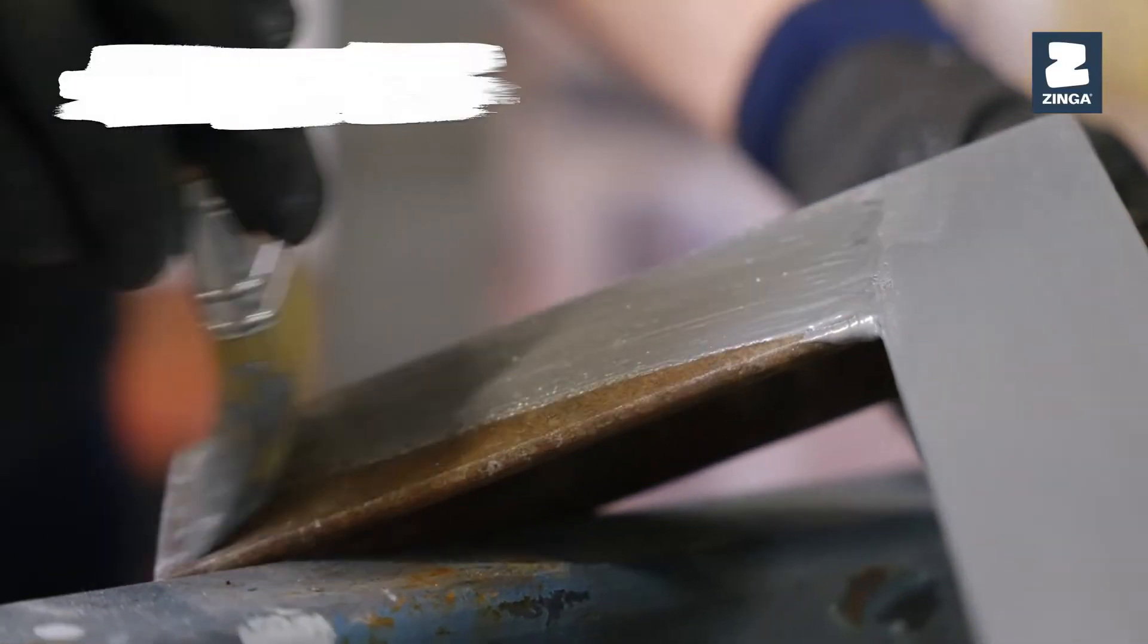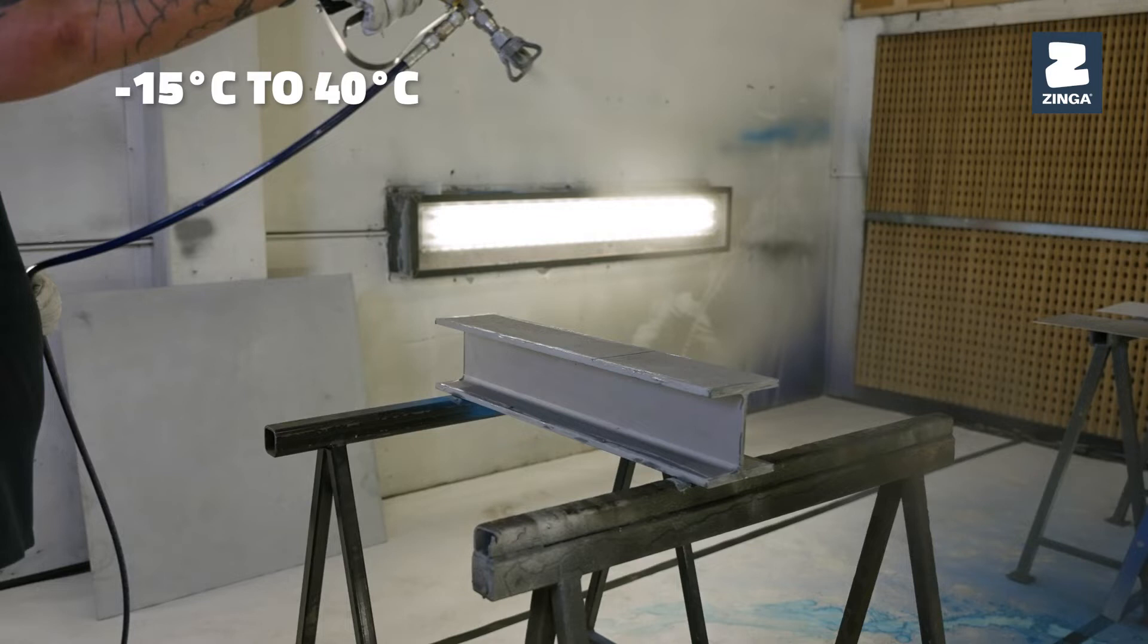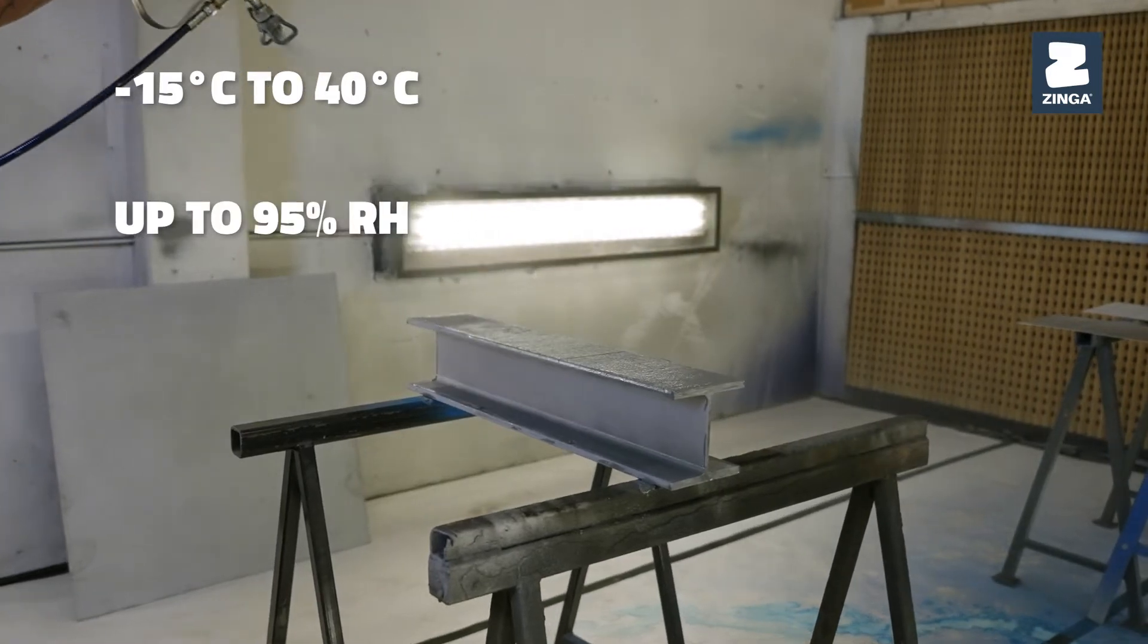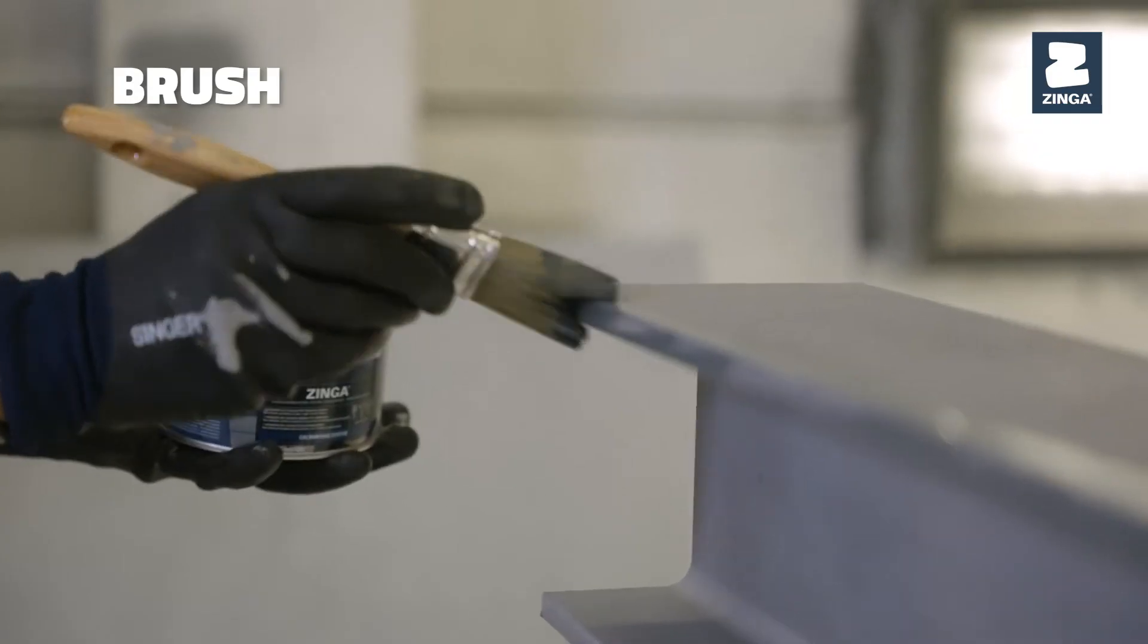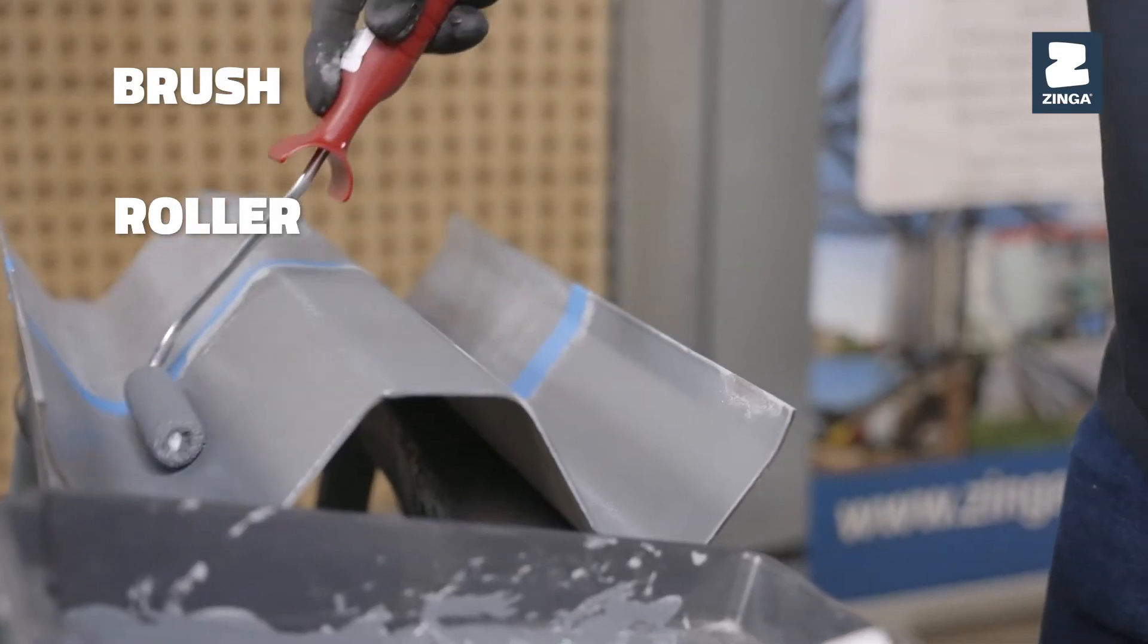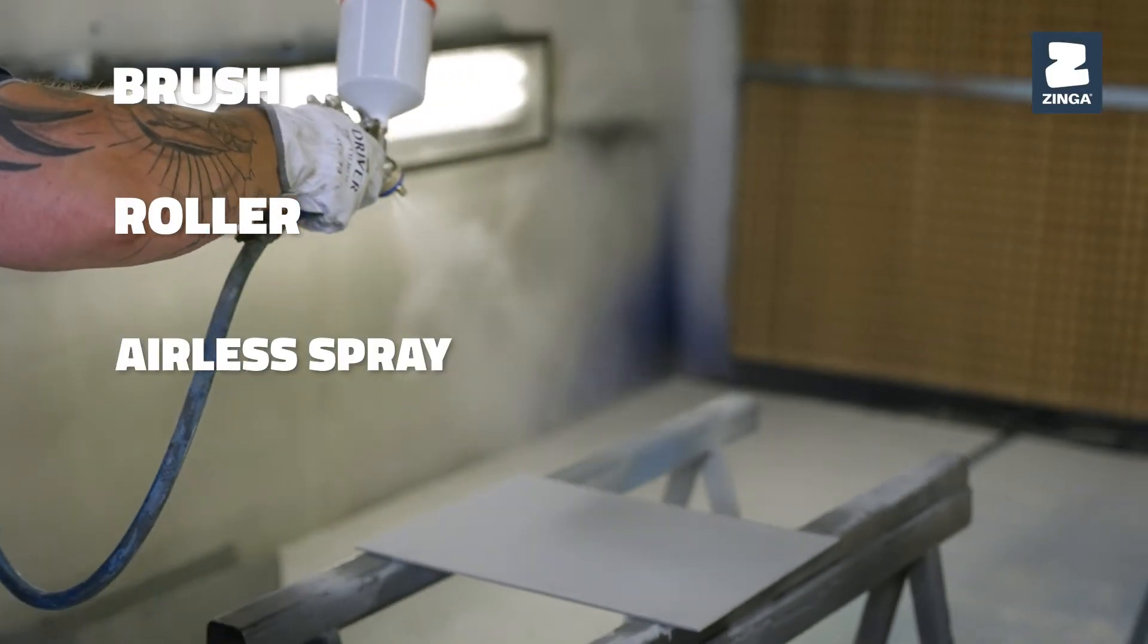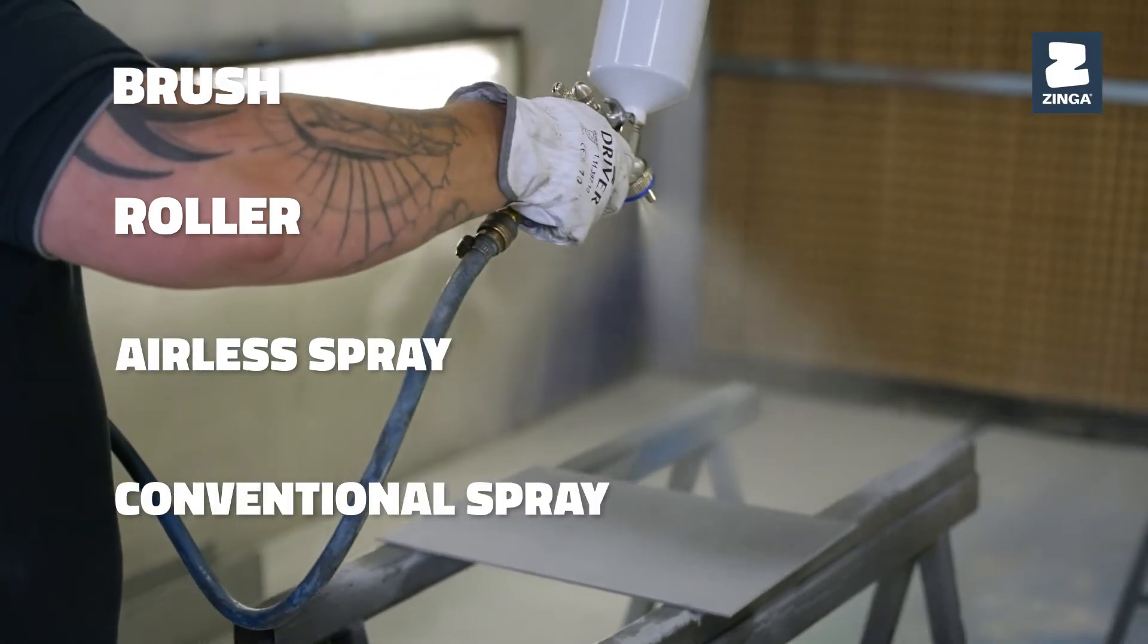Zynga can be applied at a wide range of temperatures and humidity levels. Choose the application method that suits your project: brush for touch-ups and stripe coating, roller for efficient coverage, airless or conventional spray for quick and uniform application.